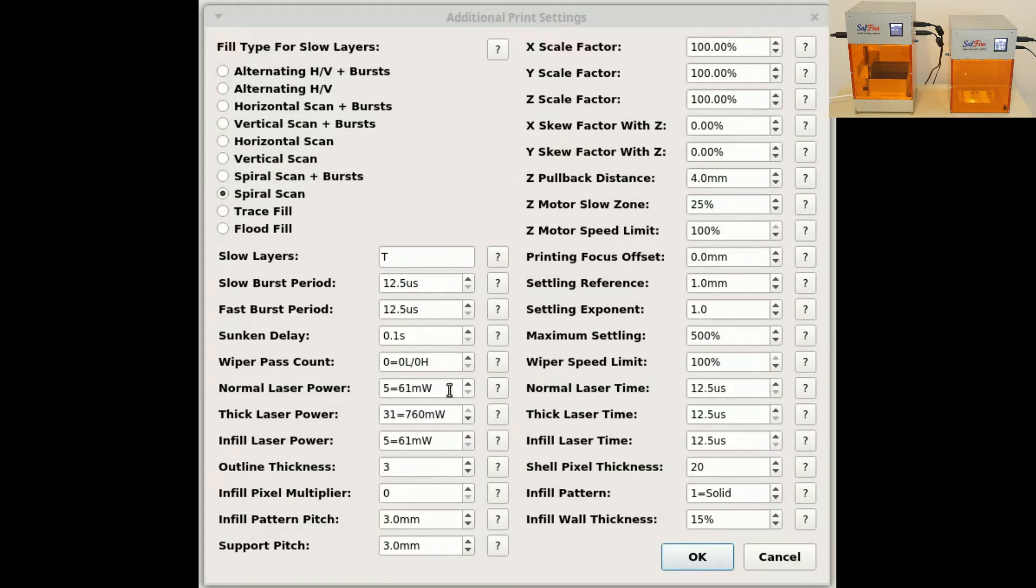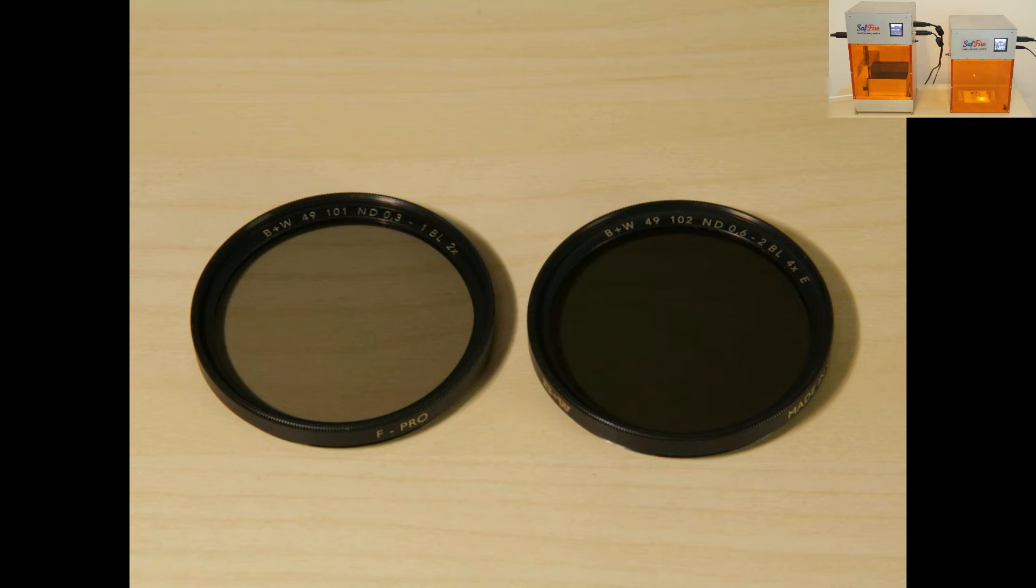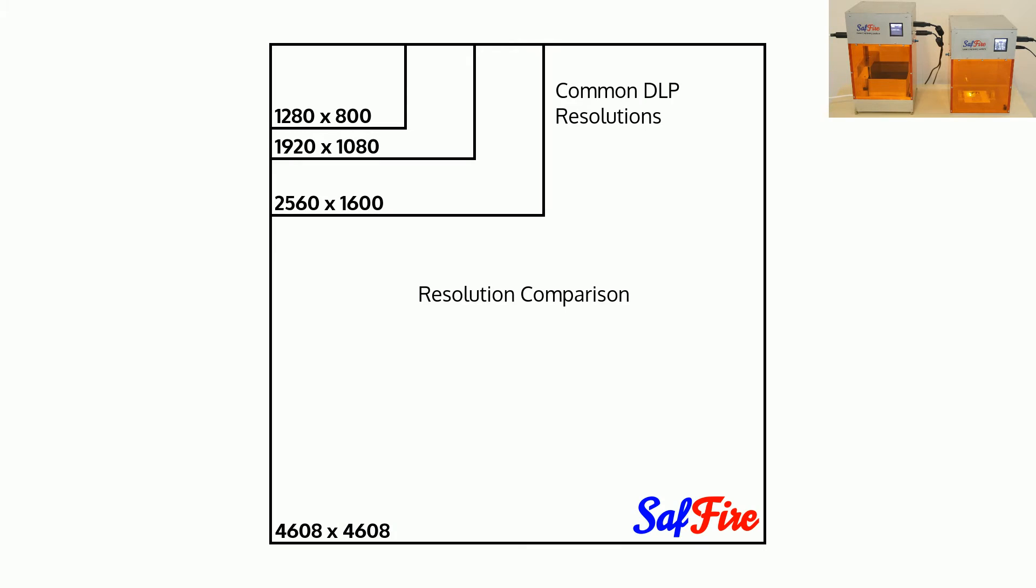The laser diode's power can be adjusted from 75 to 750 milliwatts by means of direct current control, and its pulse time can be varied greatly. Neutral density filters can even be added to reduce the output power down to 10 milliwatts for very precise prints. The Sapphire supports a maximum image resolution of 4,608 pixels square, unheard of for any single array DLP projector.